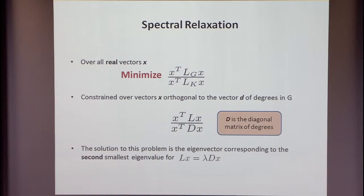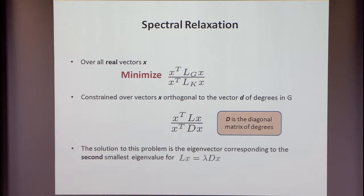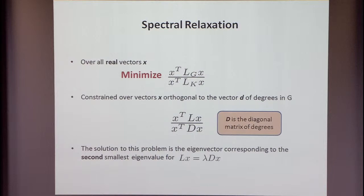The solution to this problem is the eigenvector corresponding to the second smallest eigenvalue for the generalized problem L x = λ D x. What can be said about the eigenvalue? This is the Cheeger inequality, a very basic fact that motivated a lot of spectral graph theory. The easy direction is that the second eigenvalue is smaller than the conductance. The non-trivial direction is that the conductance is less than approximately the square root of the eigenvalue. That means the eigenvalue reveals information about the value of the sparsest cut.